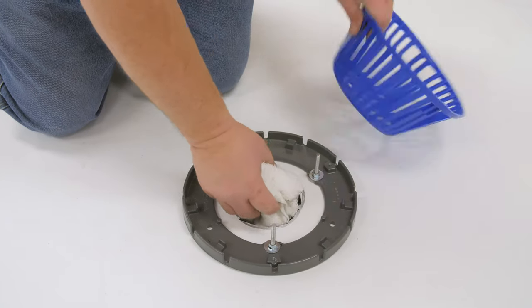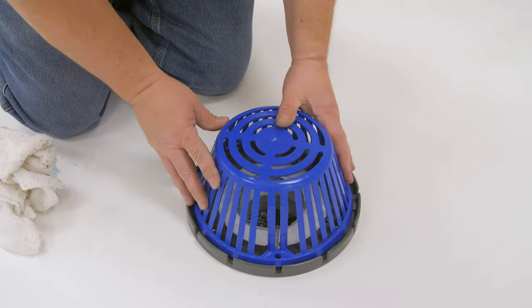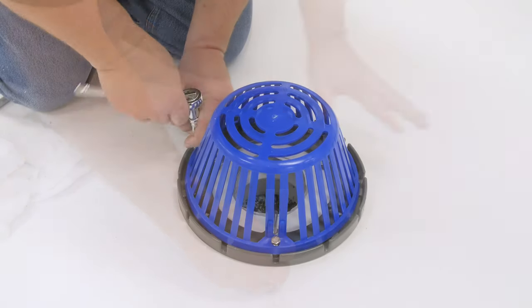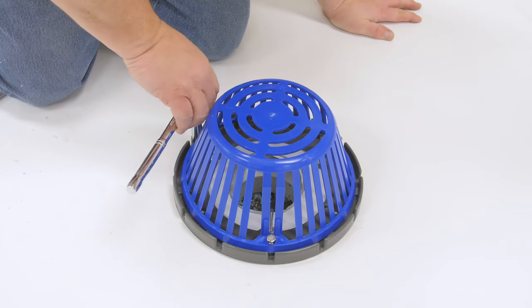Be sure to unplug the drain line before installing the strainer. Some strainers twist tight, and others are held in place with fasteners. All roof drains must have drain strainers.